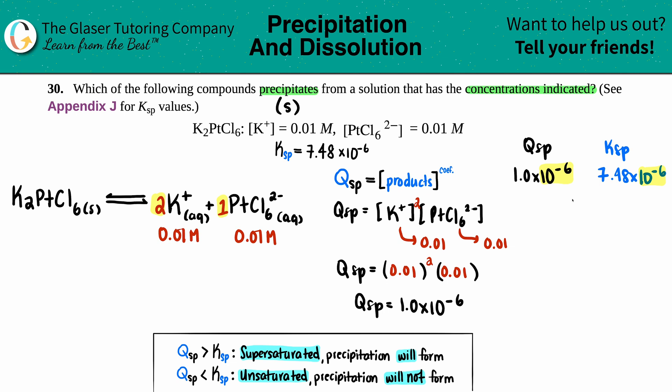But here since the exponents are the same, you look at the actual values. I have 1.0 versus 7.48. 7.48 is greater than 1.0, so therefore the Qsp would be less than the Ksp, or the Ksp would be greater than the Qsp.